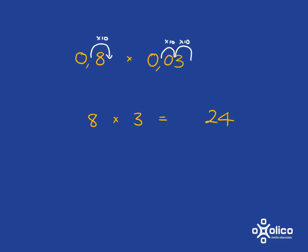So when we get to the answer, we must make up for all that cheating by going in reverse, and we need to divide by 10, and divide by another 10, and divide by another 10. So our decimal comma is going to move all the way back to over here. And so the answer is going to be 0.024.